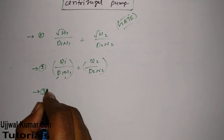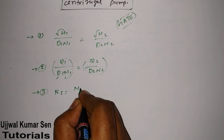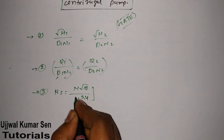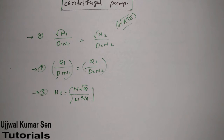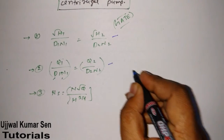The third and most important relation is specific speed: ns = n · √q / h^(3/4). This is for centrifugal pumps. For turbines, the exponent is h^(5/4) — that is the key difference. These three relations are the most important for centrifugal pump problems.